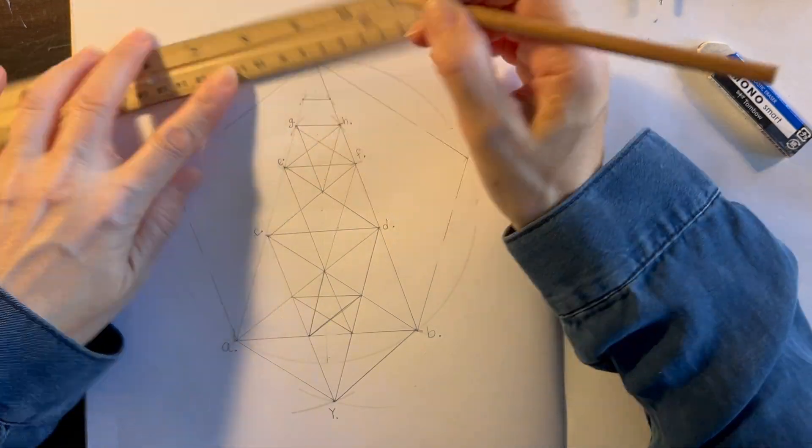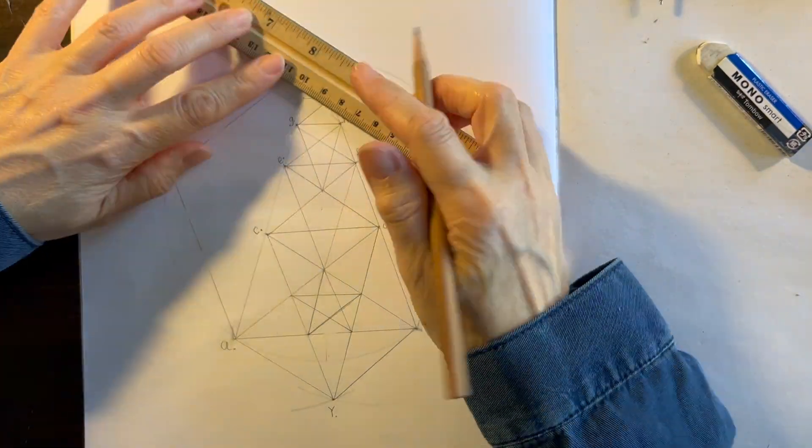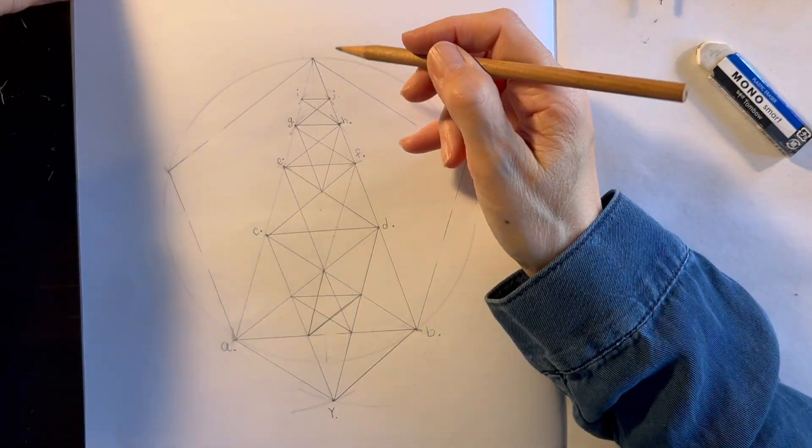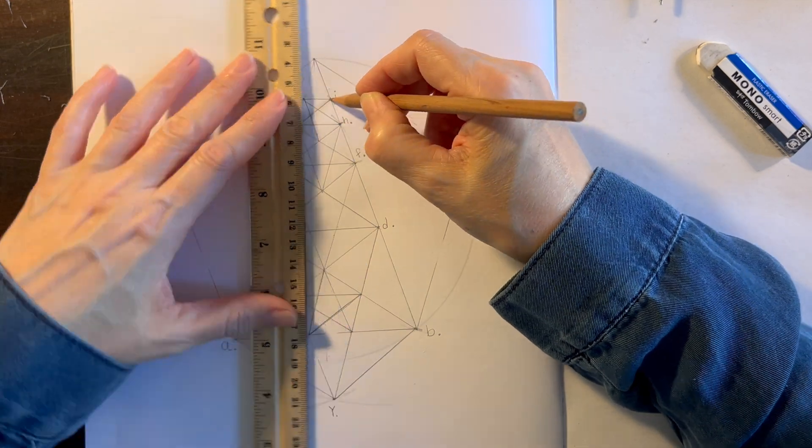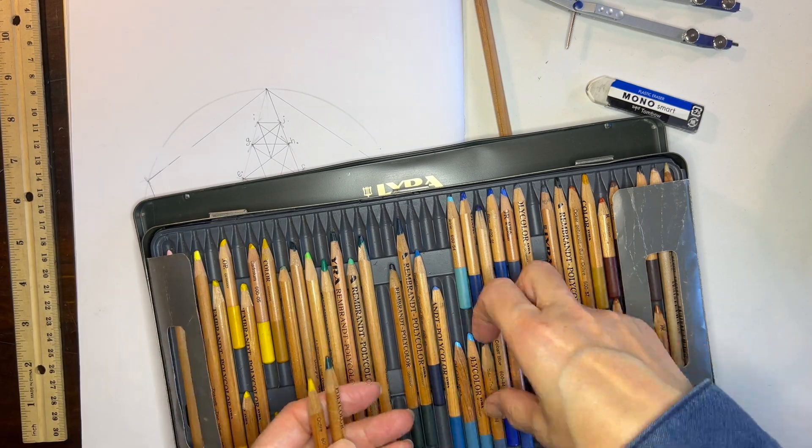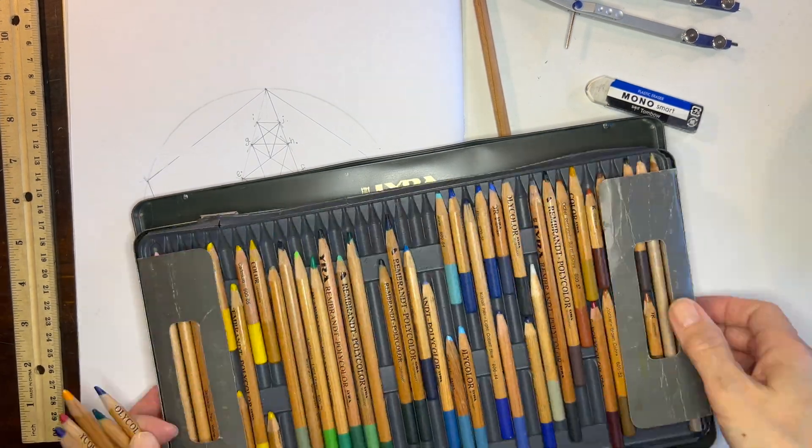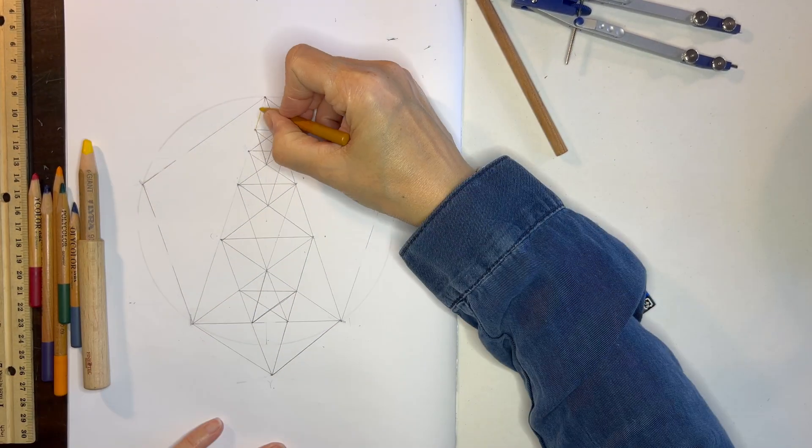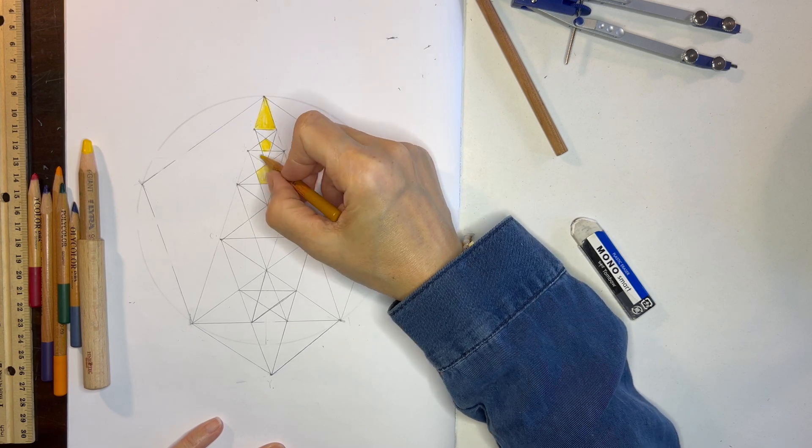So we're going to be keeping the basic structure of the triangle and in our main lesson book, it does have us erasing the pentagon and the circle. But for now, I'm keeping it and I'm not sure whether I'm going to keep it in the end or whether I'm going to erase them.